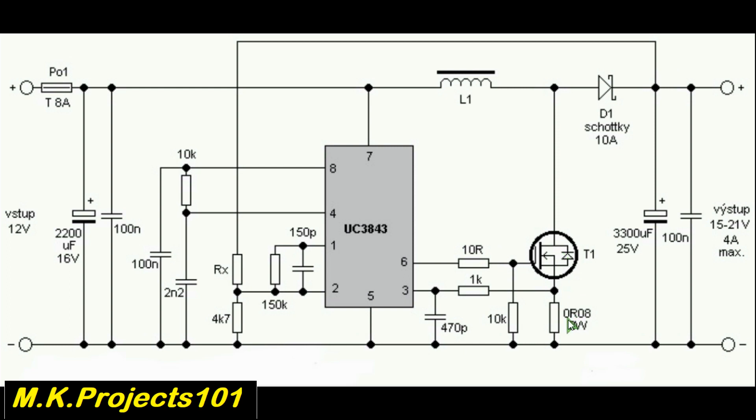So the current sensor resistor should be 0.1 ohms and 2 watts. So this provides current feedback. When the current is exceeded, the duty cycle is minimized to prevent overheating of the MOSFET.